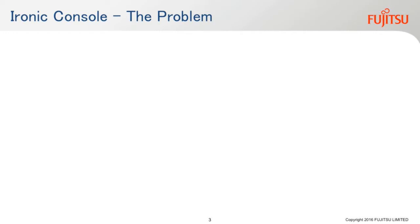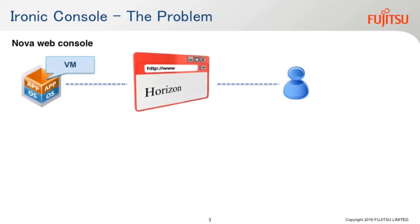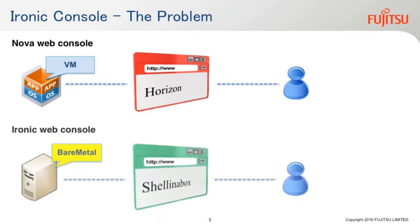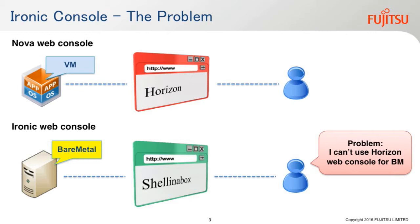Currently, Ironic also supports web console, but it has a little bit of a problem. In the NOVA web console, it supports the operator and tenant using Horizon, which is one of the official OpenStack components, to access the virtual machine. In Ironic web console, the operator can only use a web browser to connect to bare metal through shell-in-a-box. It means that currently in Ironic, the operator cannot use the Horizon web console for bare metal in case of troubleshooting. So that is the problem.